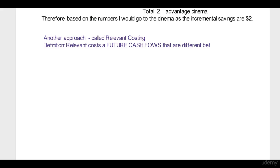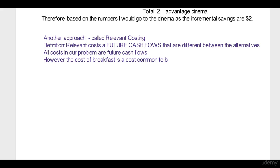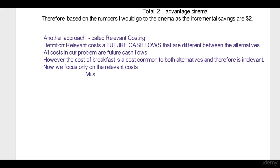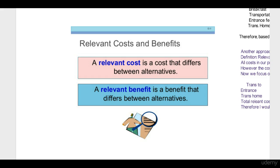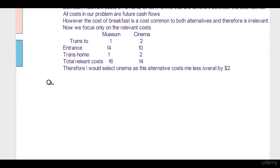There is another approach I actually prefer, called relevant costing. A relevant cost is defined as future cash flows that are different between the alternatives. In this problem, all costs are future cash flows; however, breakfast is common to both, so we completely ignore it and focus only on costs that are different. We total them up and choose the one that leaves us better off. This is called relevant costing analysis — relevant costs and relevant benefits.